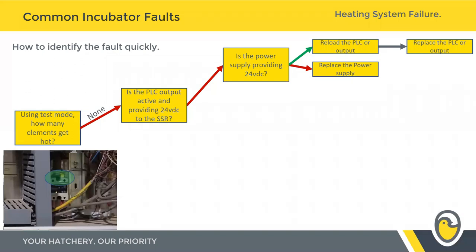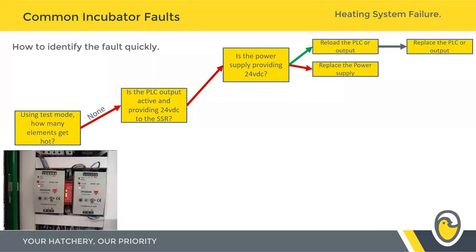If the power supply isn't supplying a clean 24 volts, you have two options. First, manually adjust the output of the power supply — there's usually a small dip switch on the front which you can tweak to modulate the output, since as the power supply degrades over time you'll see a gradual reduction in output voltage. Failing that, replace the power supply. On a Rock control, you've got dual power supplies — one that supplies the field devices and one that supplies the relays inside the cabinet.